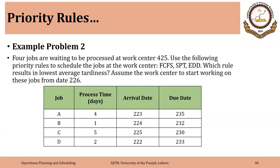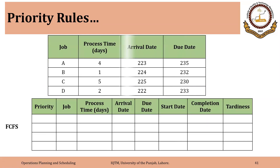In example problem two, four jobs are waiting to be processed at work center 425. Use three priority rules to schedule the jobs: First Come First Serve, Shortest Processing Time, and Earliest Due Date. Which rule results in the lowest average tardiness? Assume the work center starts working on these jobs from day 006 — that date represents the number of working days in a year using a production calendar that marks only working days. We will first use the First Come First Serve priority rule, so the job that arrived first should be processed first.